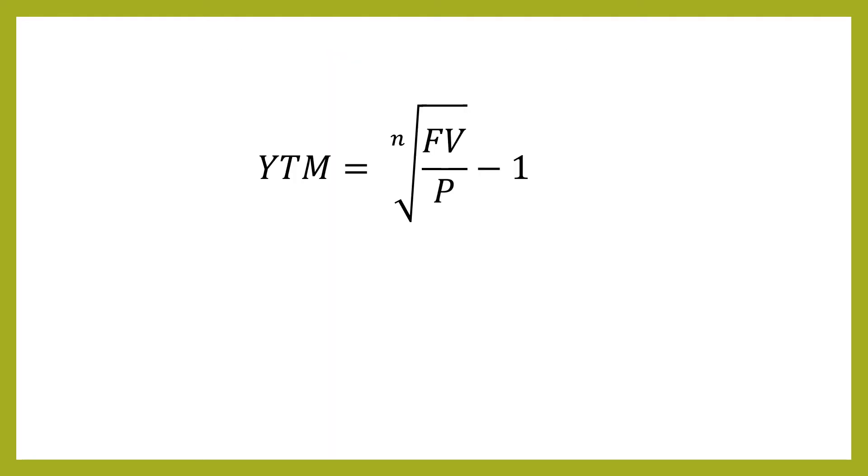This is the formula that you need to use. The yield to maturity is the nth root. So if n was 2, it'd be the square root. If n was 3, it'd be the cube root of the face value divided by the price minus 1.